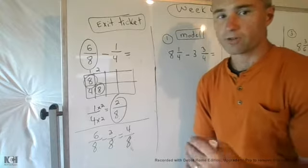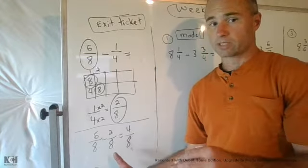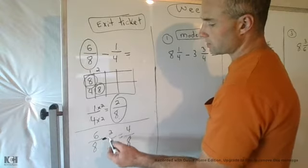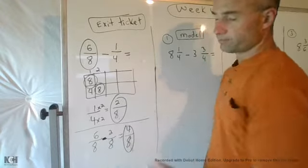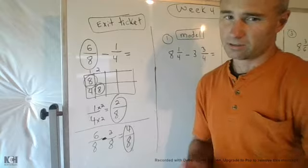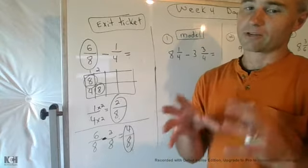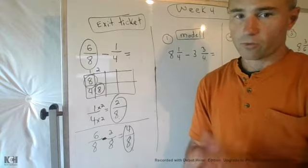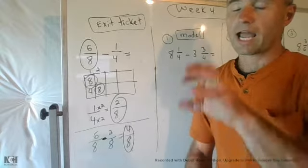Then the next step that you hopefully did, if not maybe this is where your mistake happened, is subtract 6/8 minus 2/8 to give you 4/8. That's an okay answer, it's a good answer but not a great answer.